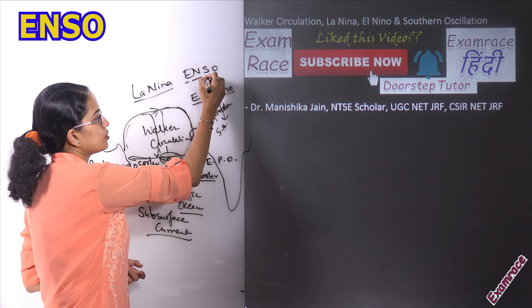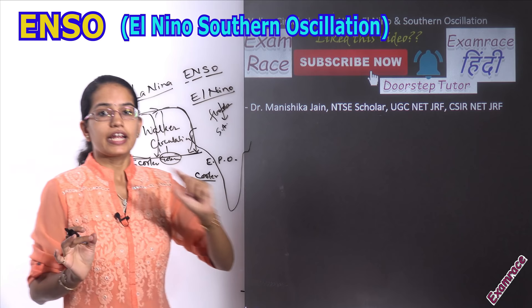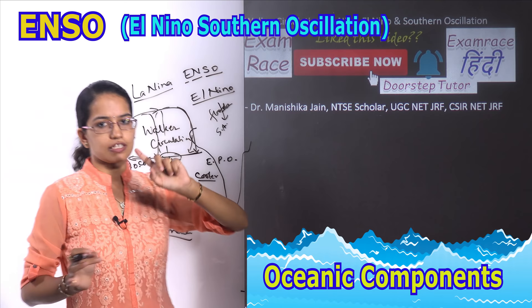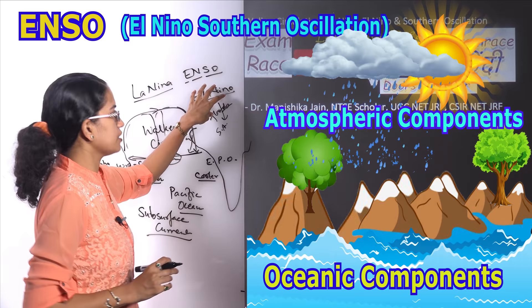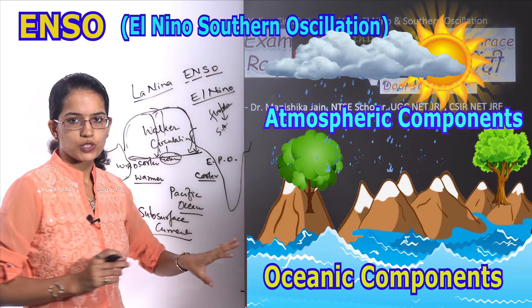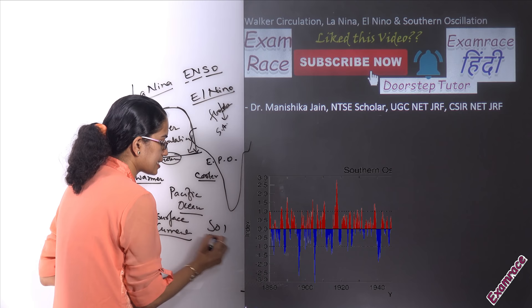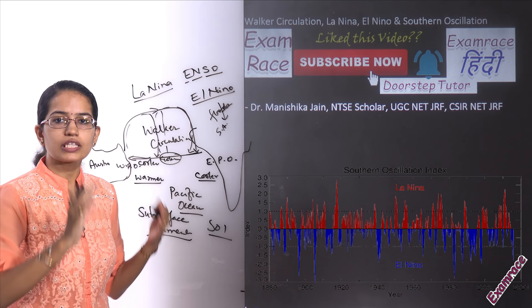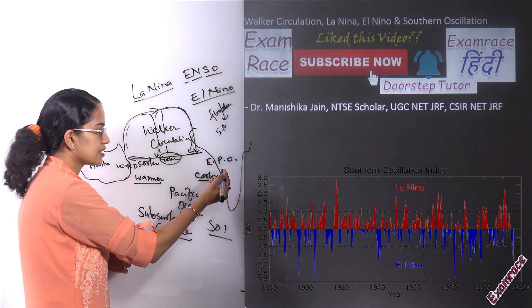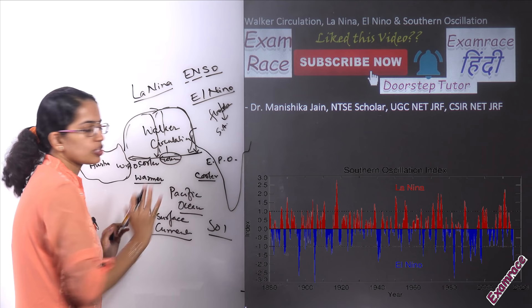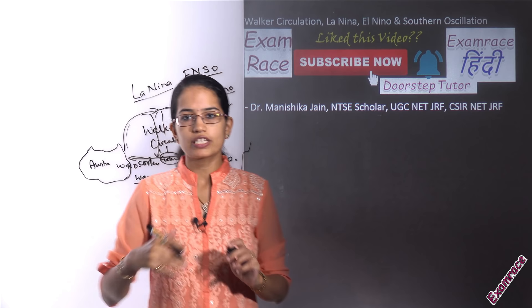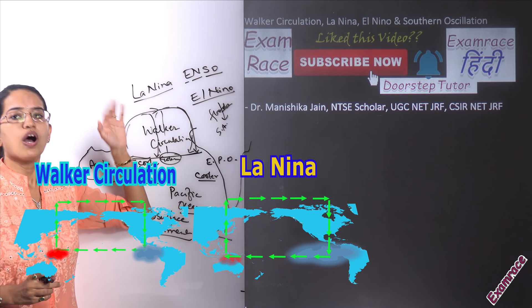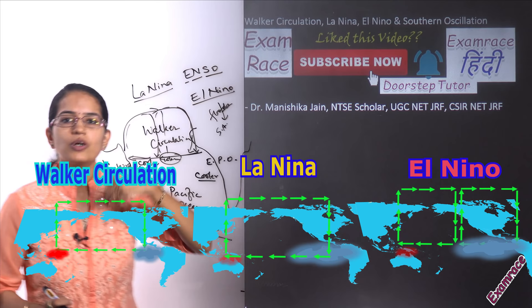The next important concept is ENSO — El Niño Southern Oscillation. El Niño is the oceanic component, while Southern Oscillation is the atmospheric component. The changes in atmospheric conditions caused by El Niño are explained as Southern Oscillation. To understand this, there is the Southern Oscillation Index (SOI), which explains the fluctuations in temperature and pressure conditions at Tahiti in the Pacific and Darwin in Australia. Intensification of Walker Circulation leads to La Niña; weakening leads to El Niño; and the atmospheric component is Southern Oscillation.